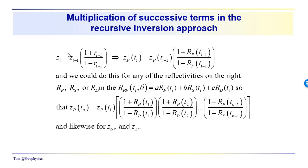We have this basic recursive relationship - we're using this notation where z sub p at t sub i is equal to z sub p at time t sub i minus 1 times 1 plus r sub p t sub i minus 1 over 1 minus r sub p at time t sub i minus 1. We could do this for any of the reflectivities on the right hand side of this equation.